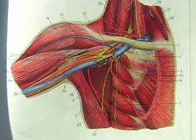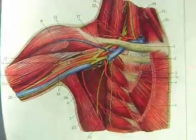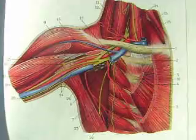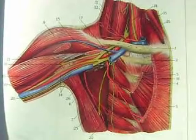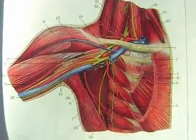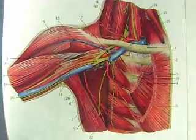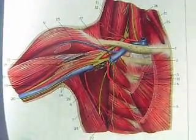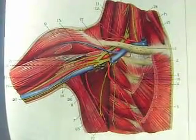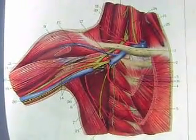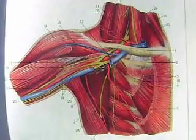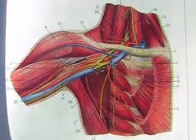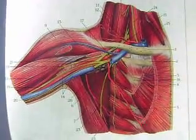If we look anterior, you'll see the clavicle, which is attached medially to the sternum, and then laterally to the scapula. The scapula is essentially your shoulder blades. The main bone of the upper arm is also a part of the shoulder — that is the humerus. The humerus abuts the acromion process, which is essentially the primary components of the shoulder girdle.